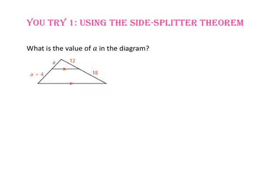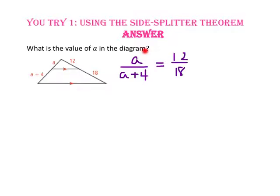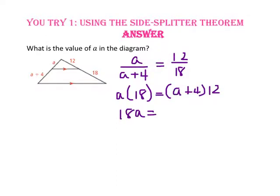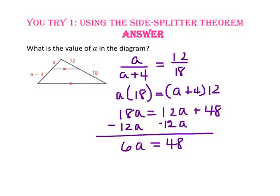Pause the video and do you-try number 1. To find the value of A in the diagram, we know that this segment is parallel to this segment, making proportional segments of the triangle. So A to A plus 4 will equal 12 to 18. Let's use the cross product property to multiply the extremes and the means. Using the distributive property, 12 times A is 12A and 12 times 4 is 48. Subtract 12A from both sides and 6A equals 48. Divide both sides by 6 and A equals 8.